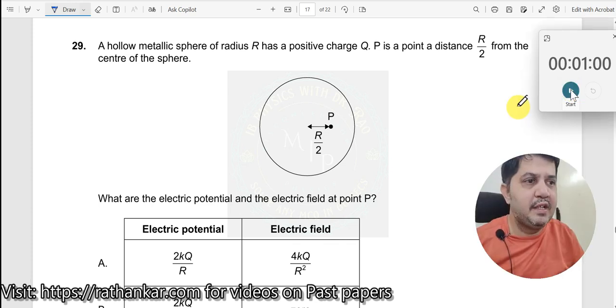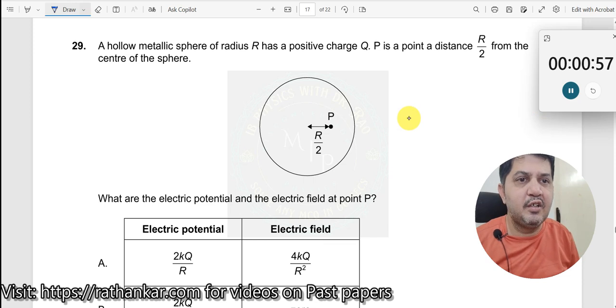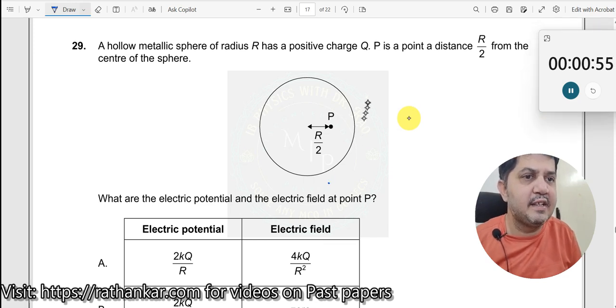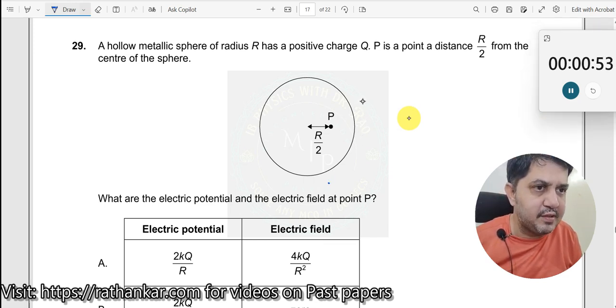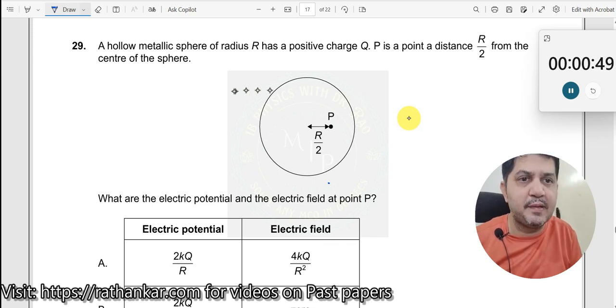Question number 29. A hollow metallic sphere of radius R has a positive charge Q. P is a point at a distance R/2 from the center of the sphere.